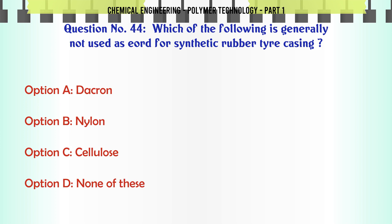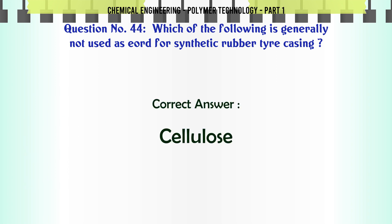Which of the following is generally not used as cord for synthetic rubber tire casing? A. Dacron, B. Nylon, C. Cellulose, D. None of these. The correct answer is Cellulose.